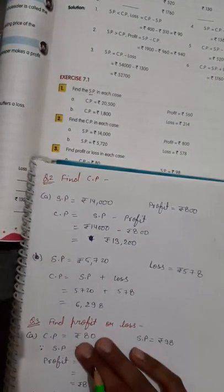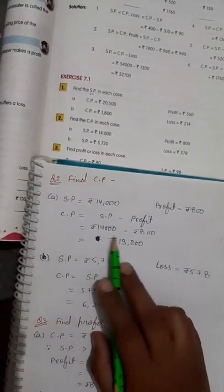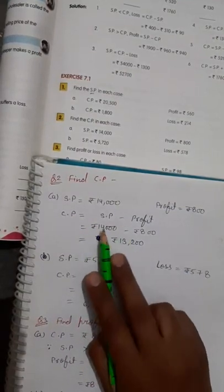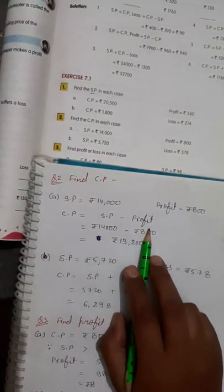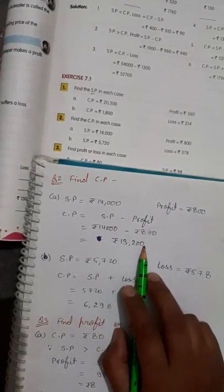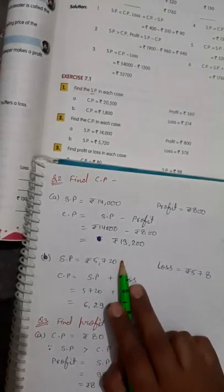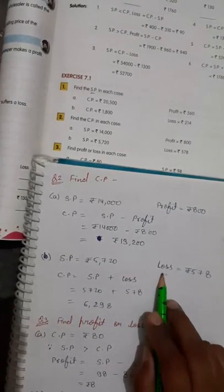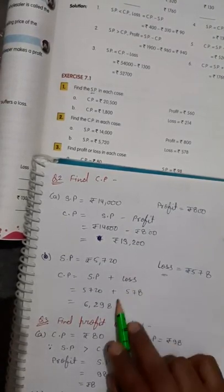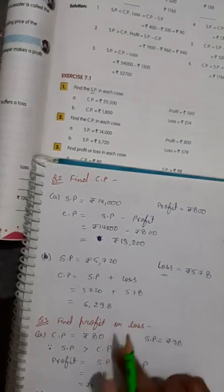Question number two: Find CP. Look at the formula chart. In the case of profit, use the corresponding formula, put in the values, and find the answer. For the loss case, look at the loss formula, put in the values, and you will get the answer.